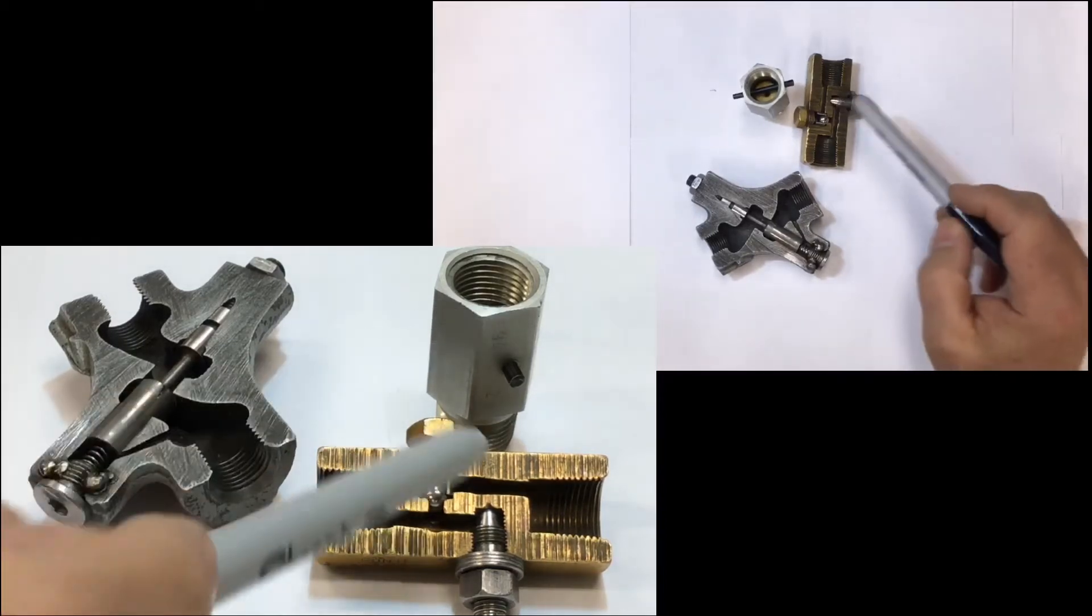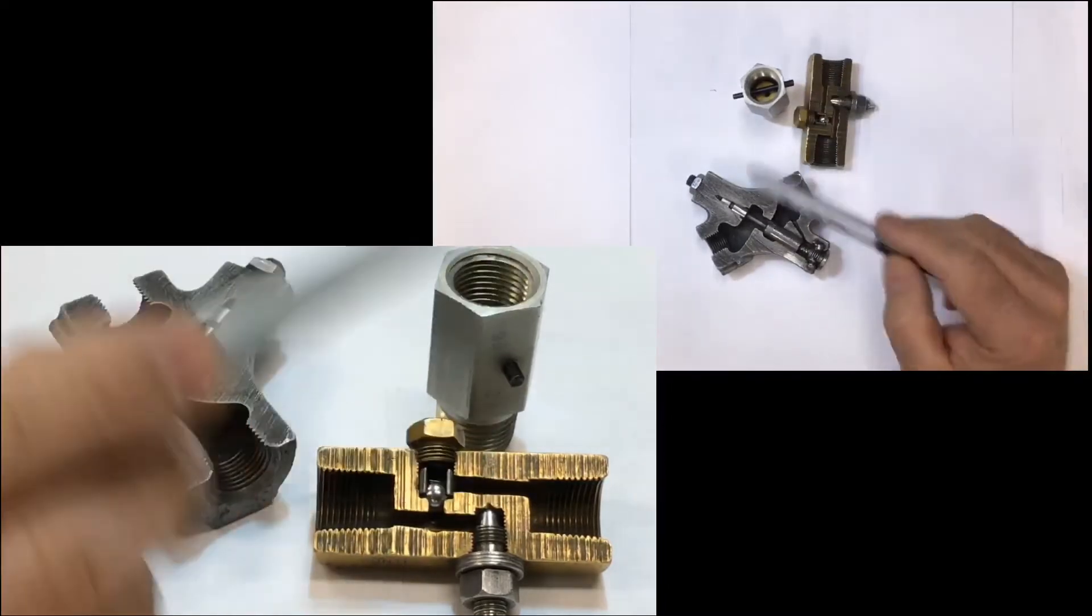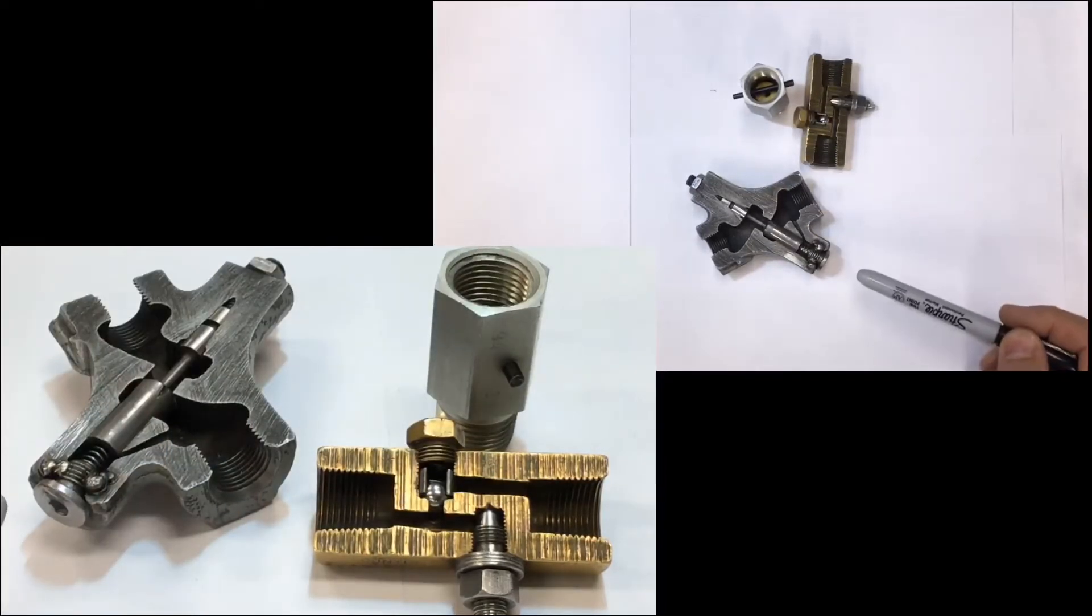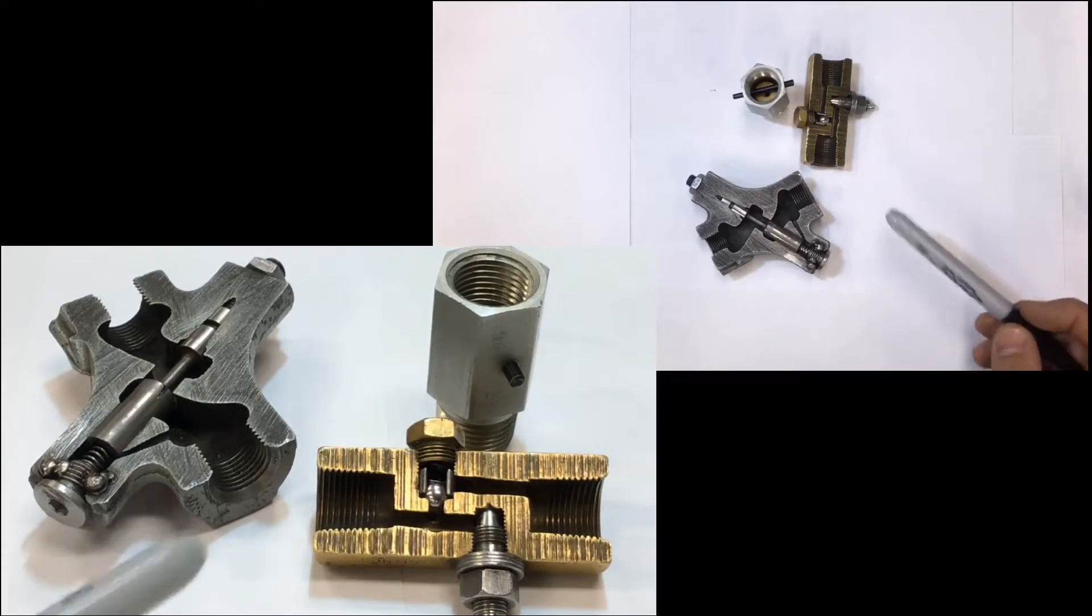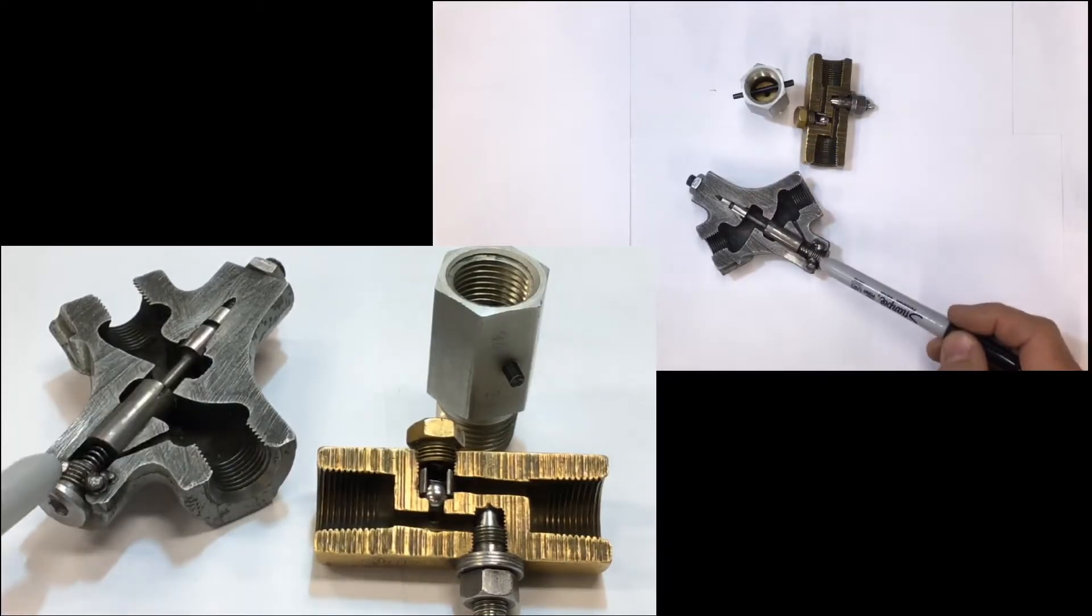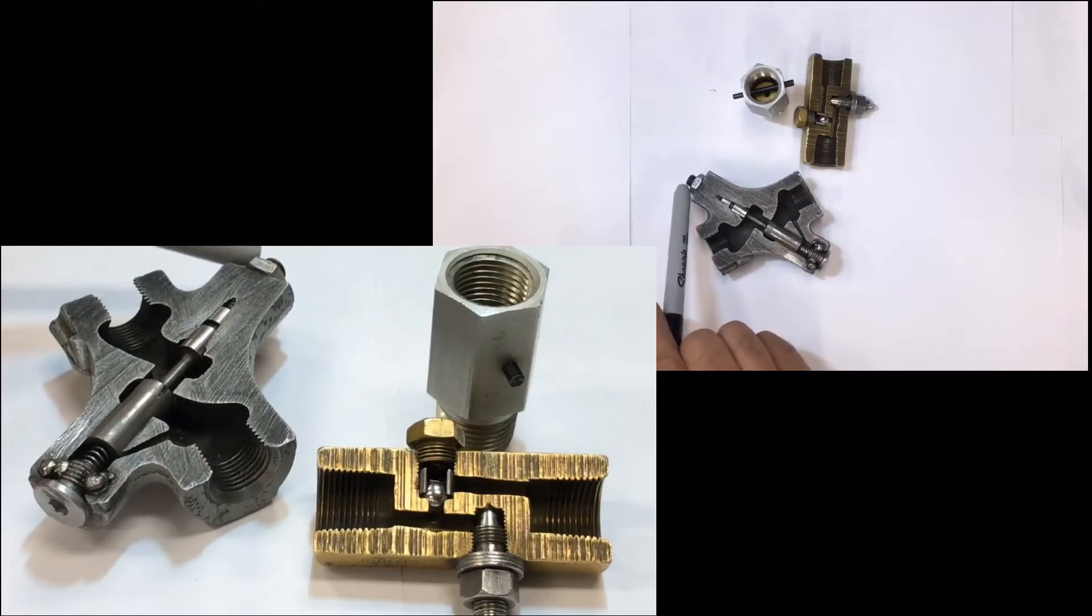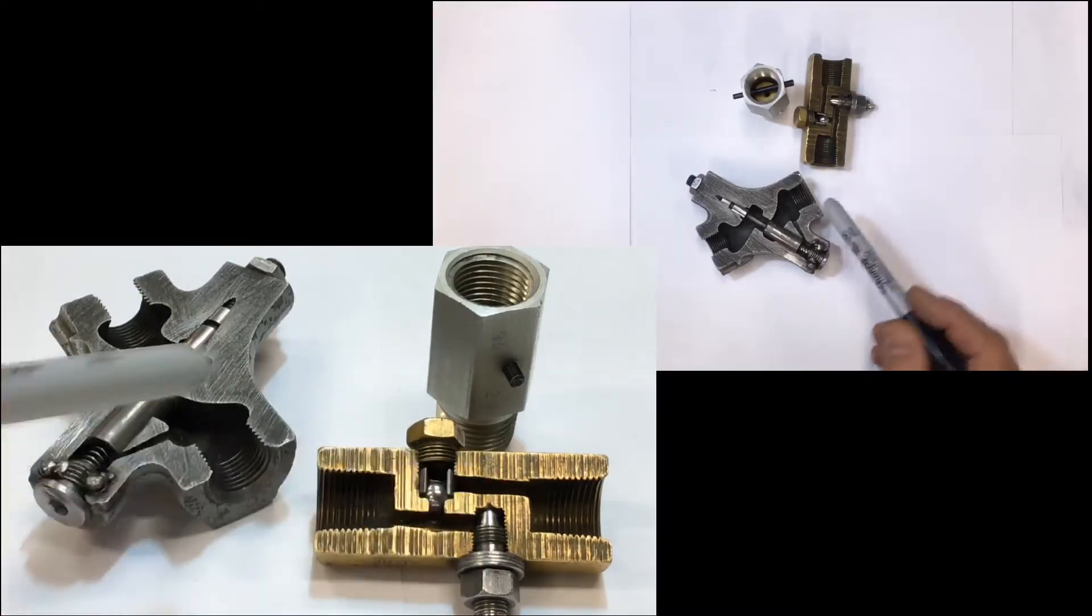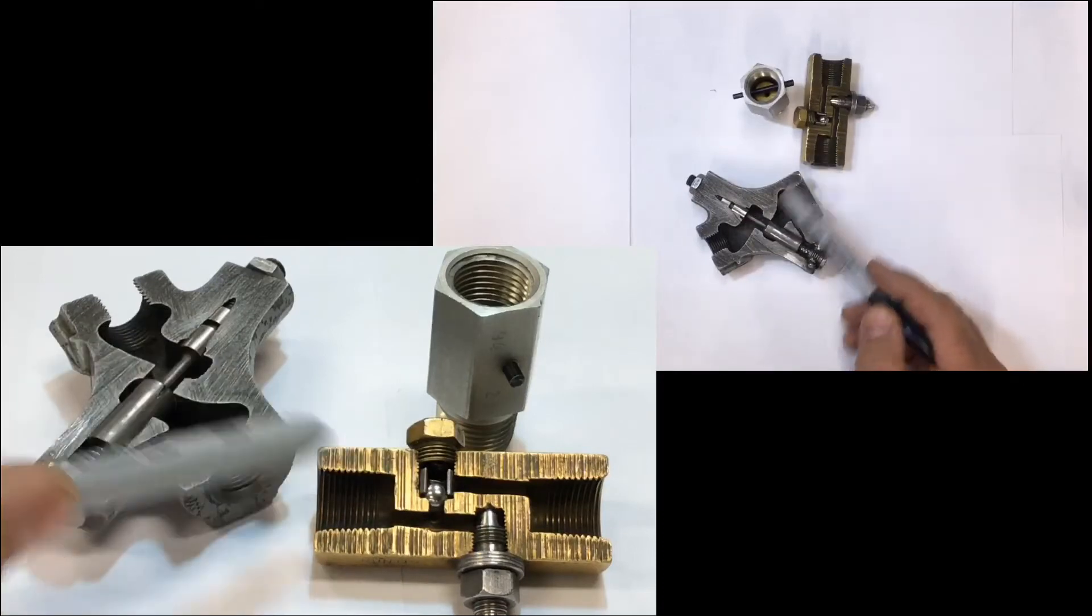What we have here are three flow controls, restrictor type flow controls. Two of them are variable. You can tell the variable by the adjustment screw here that can go in there and change the orifice size that the amount of oil is flowing through.